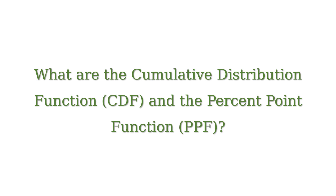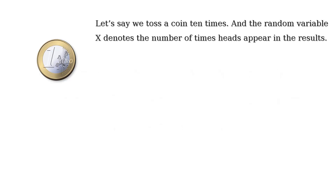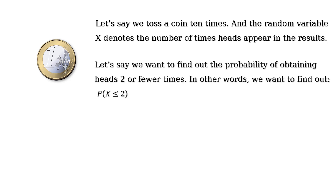Let's say we toss a coin 10 times and the random variable X denotes the number of times heads appear in the results. Now let's say we want to find out the probability of obtaining heads 2 or fewer times.